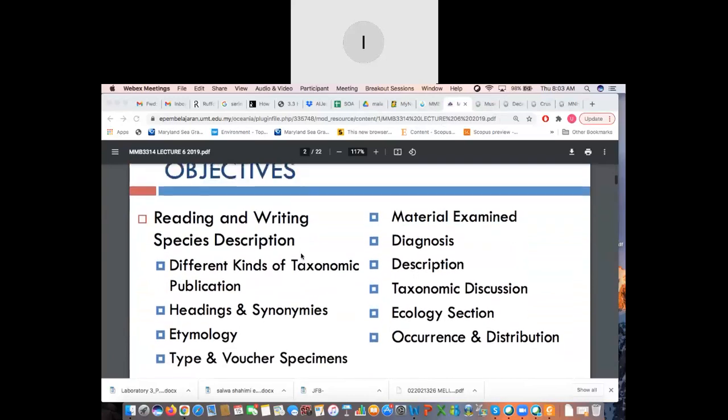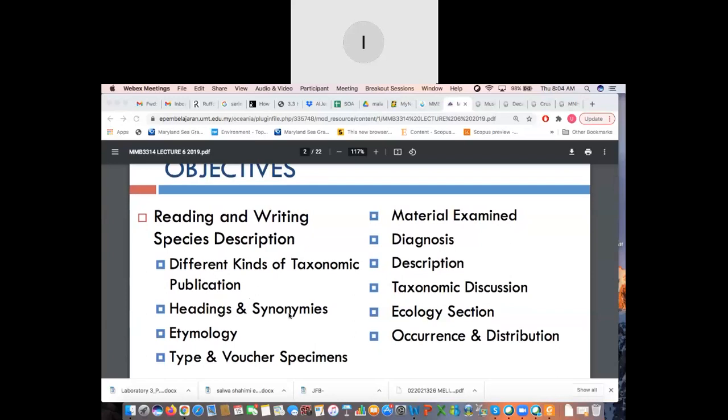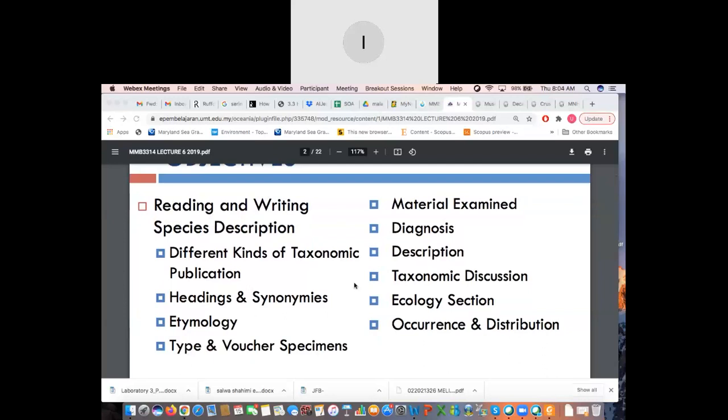So our objectives for today is how to read and write species description. So you'll be looking at different kinds of taxonomic publications, journal publications. But typically, all of them will have a heading and what is synonyms. And then you have etymology or how a new species is named. What is the type material and the voucher specimens? How do you write material examine? Diagnosis or description? Taxonomic discussion. What do you write other than your diagnosis or description? And ecological section as well as occurrence and distribution.